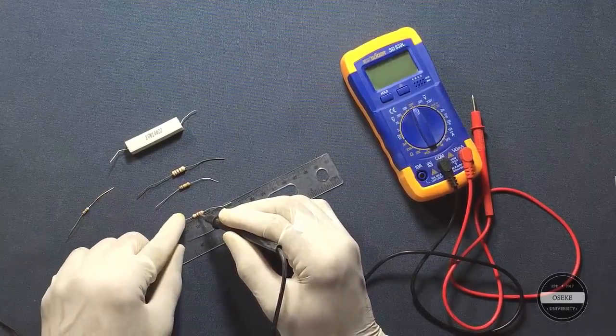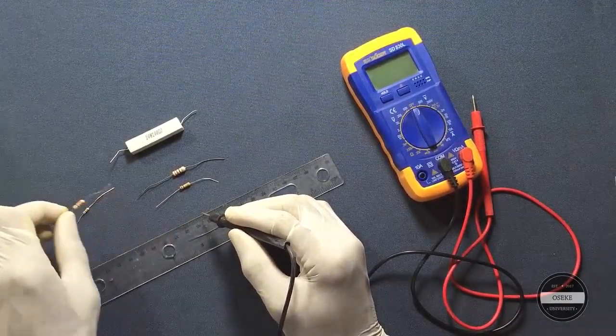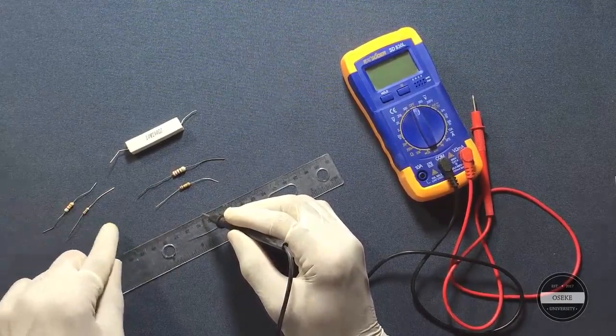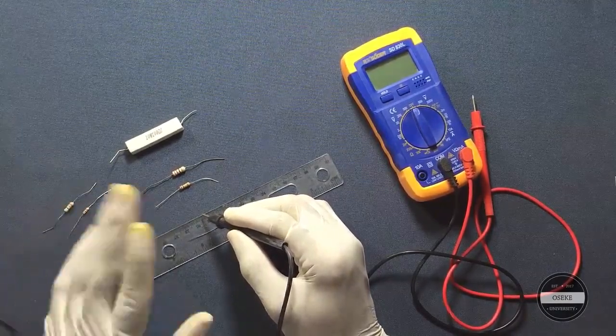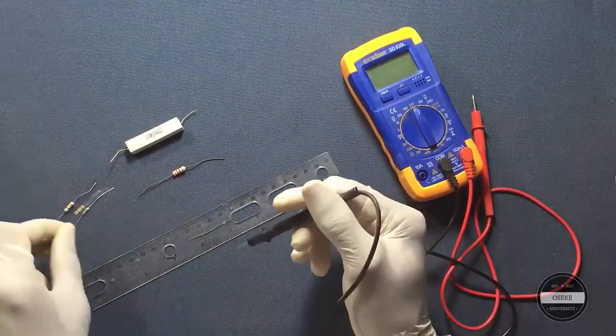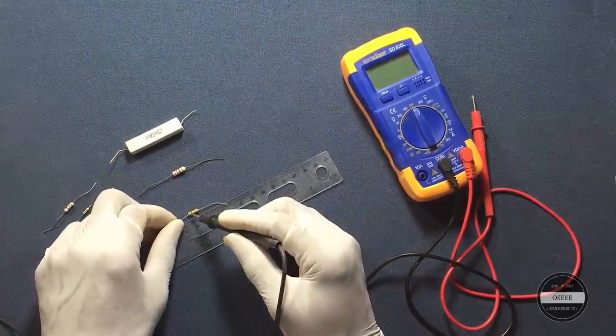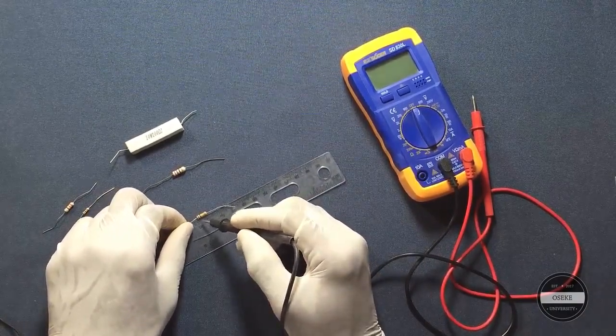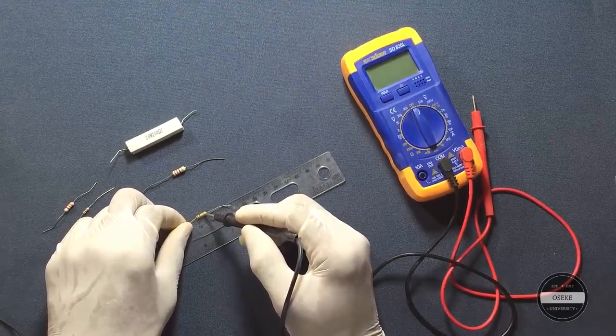Two resistors can be completely the same value but different power ratings. We'll get more into power ratings later in the course. This is another resistor. You can tell the power rating because as you can see it's almost 10 mm long, so this is another half watt resistor.